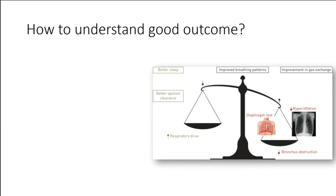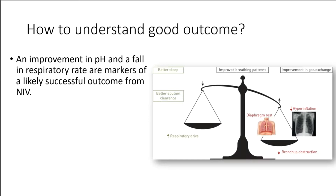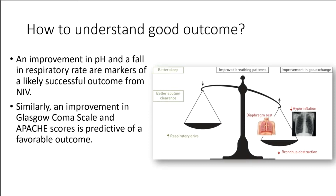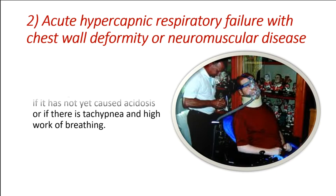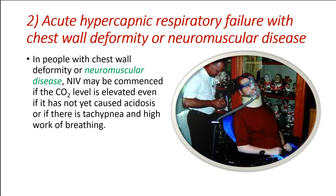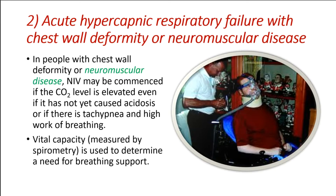How to understand good outcome: An improvement in pH and a fall in respiratory rate are markers of a likely successful outcome from NIV. Similarly, an improvement in Glasgow Coma Scale and APACHE scores is predictive of a favorable outcome. In people with chest wall deformity or neuromuscular disease, NIV may be commenced if the CO2 level is elevated even if it has not yet caused acidosis, or if there is tachypnea and high work of breathing. Vital capacity, measured by spirometry, is used to determine a need for breathing support.